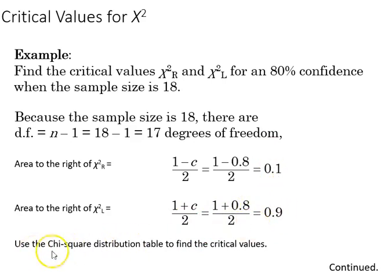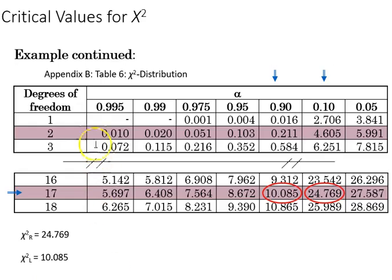We use the chi-square distribution table to find the critical values. With 17 degrees of freedom, we find the values for 0.9 and 0.1, which are 10.085 and 24.769.